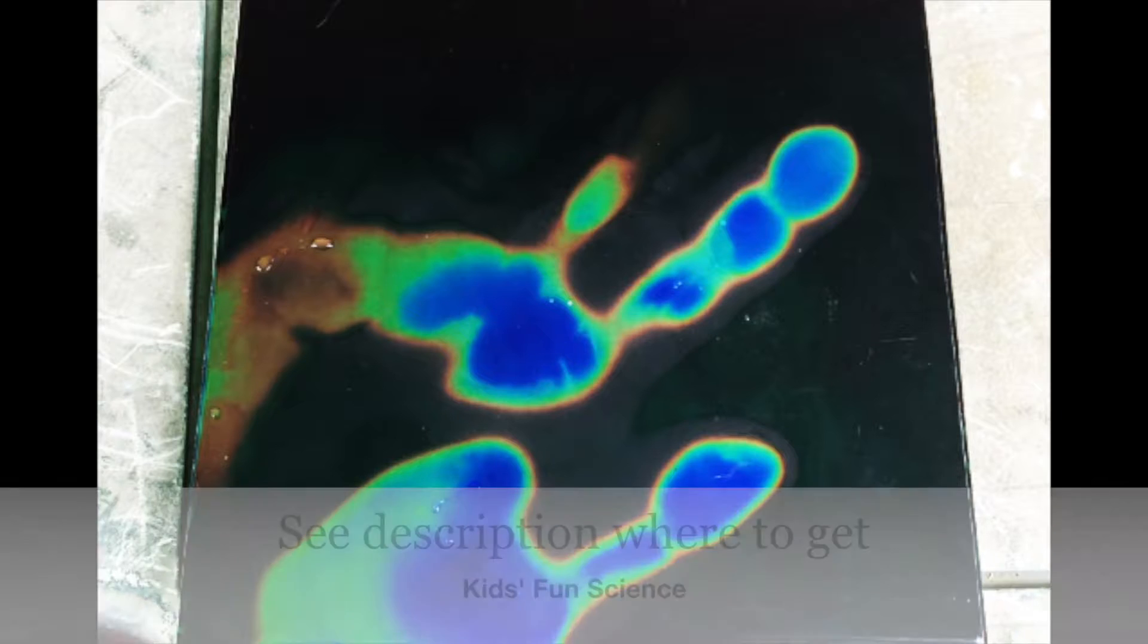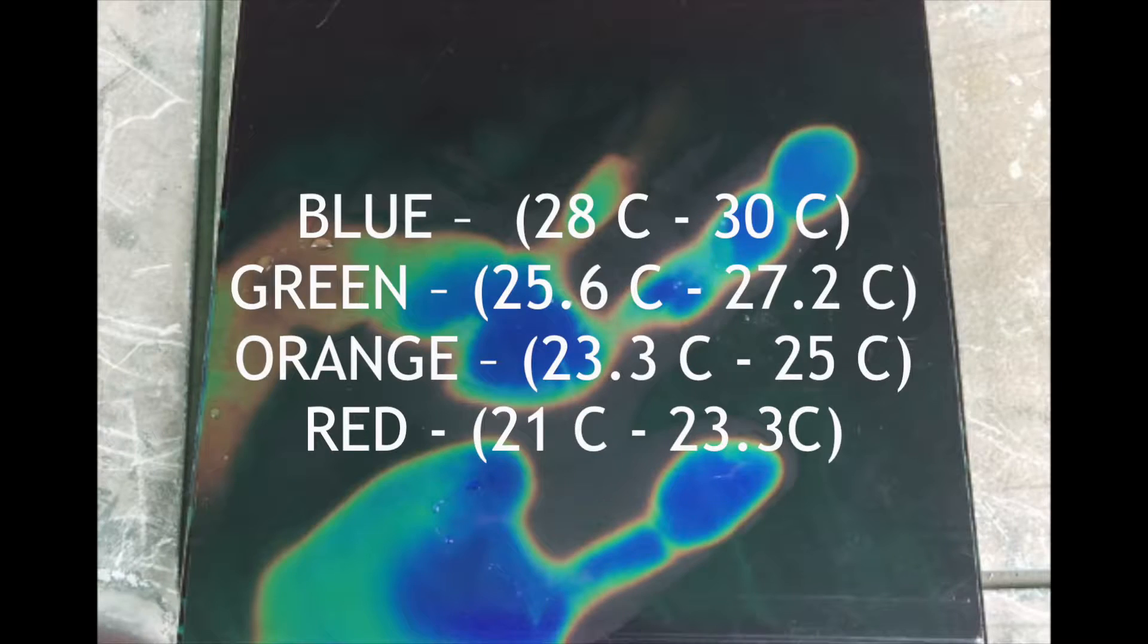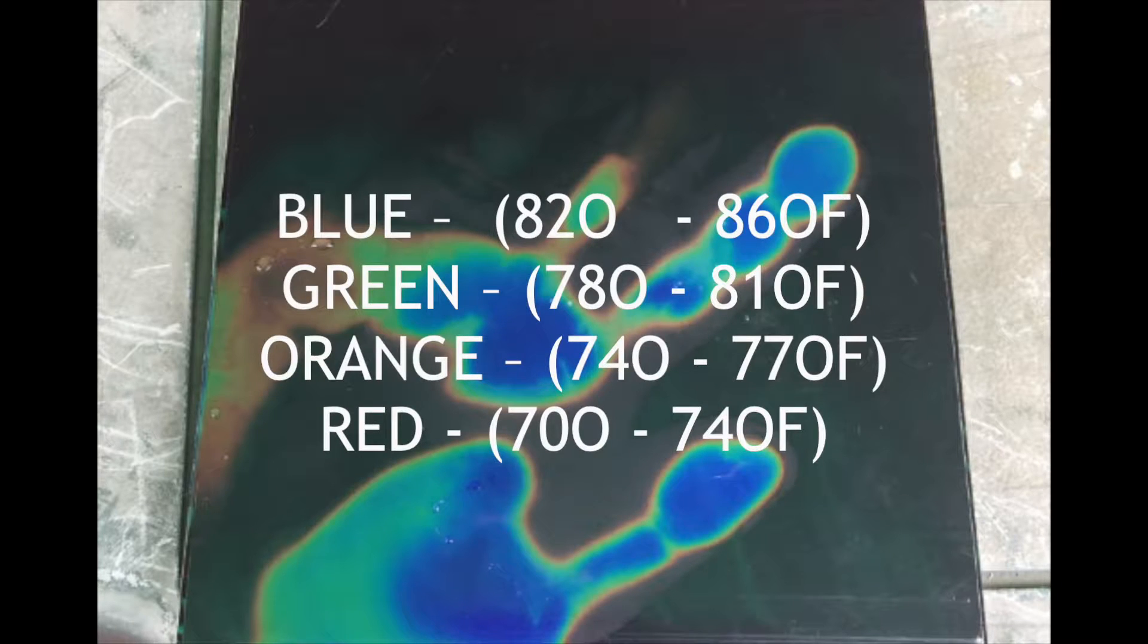What you need for this experiment is the Touch and See Squares, which you can get in the description. Here are the Celsius and the Fahrenheit per color.